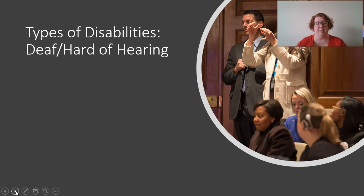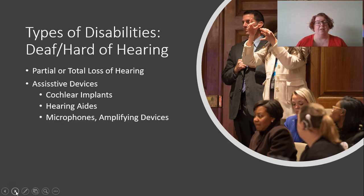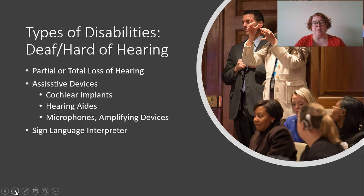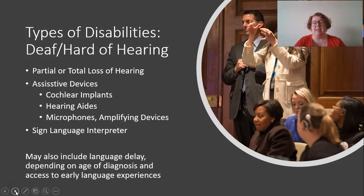Another type of disability recognized by IDEA is deaf and hard of hearing, which includes total or partial hearing loss. Students may use assistive devices or sign language — there's a lot of debate in the field between these options. The most important thing is that a child gets access to language as soon as possible. Sign language is often one way children can access communication early. A common concern with deaf and hard of hearing students is a language delay due to lack of early language exposure.